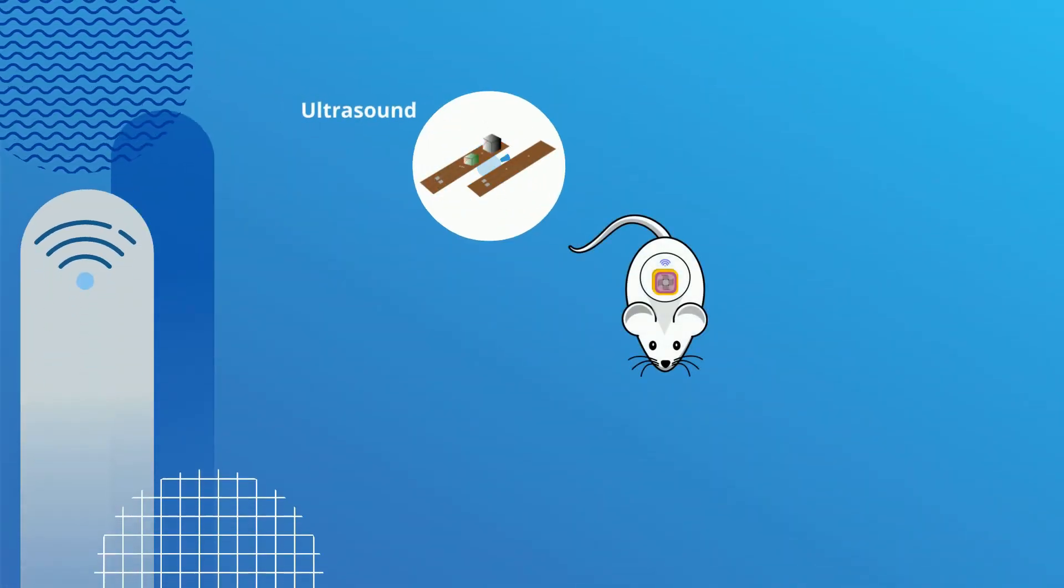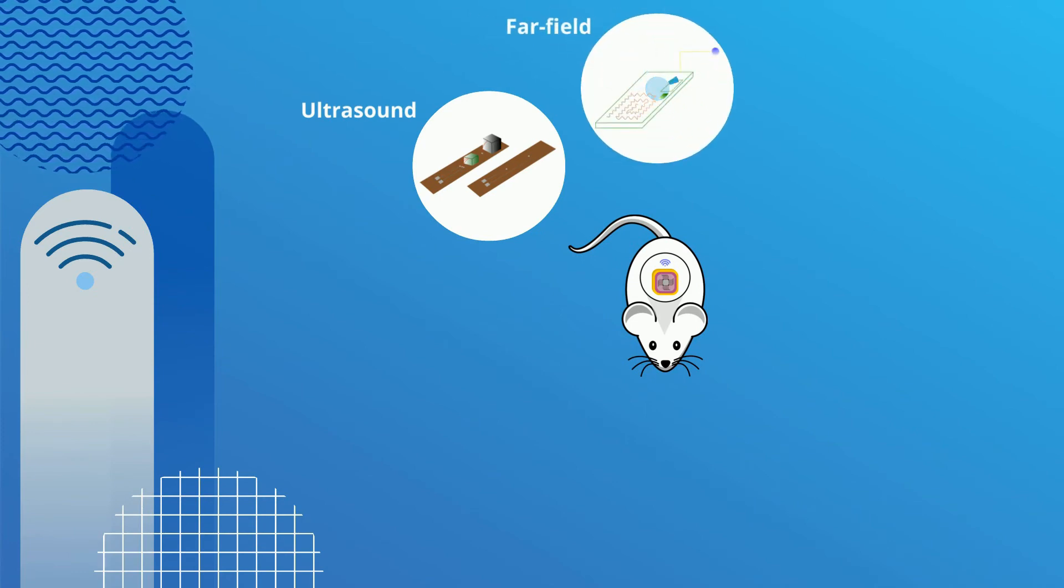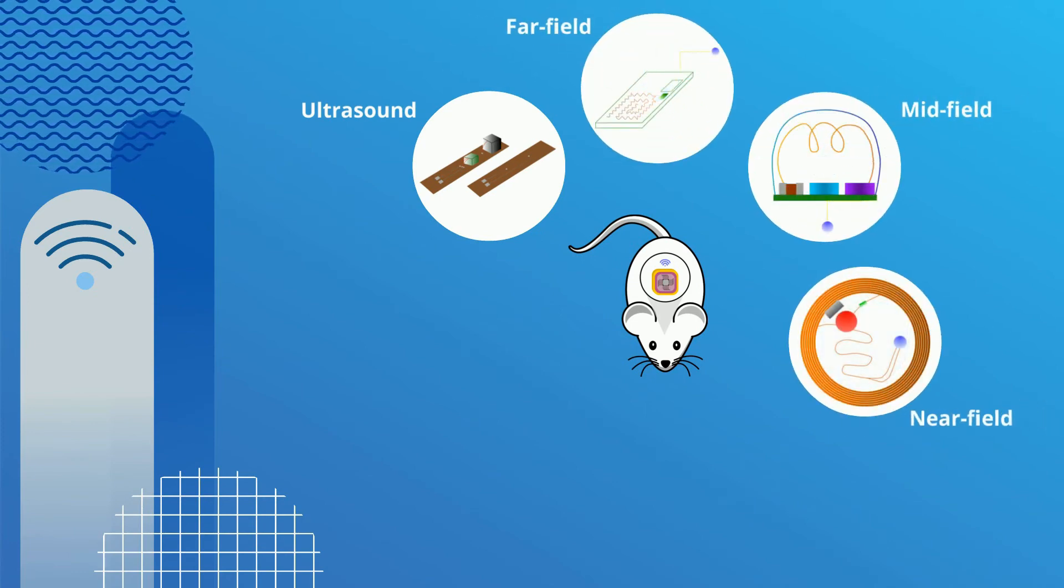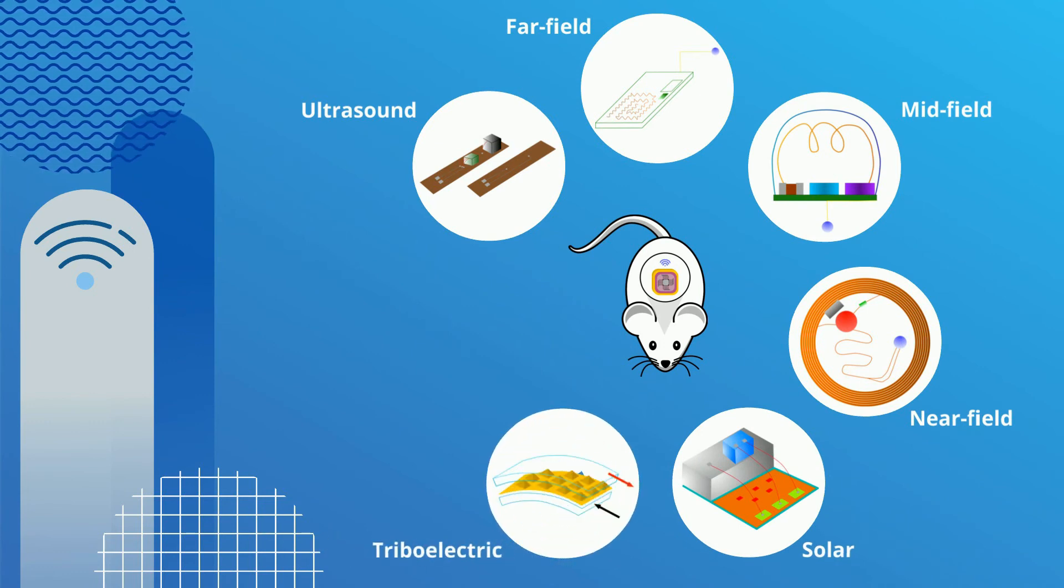The most common wireless power systems are ultrasound energy harvesters and electromagnetic antennas operating in the far, mid, and near fields. Solar, triboelectric, and thermoelectric energy are also emerging technologies.